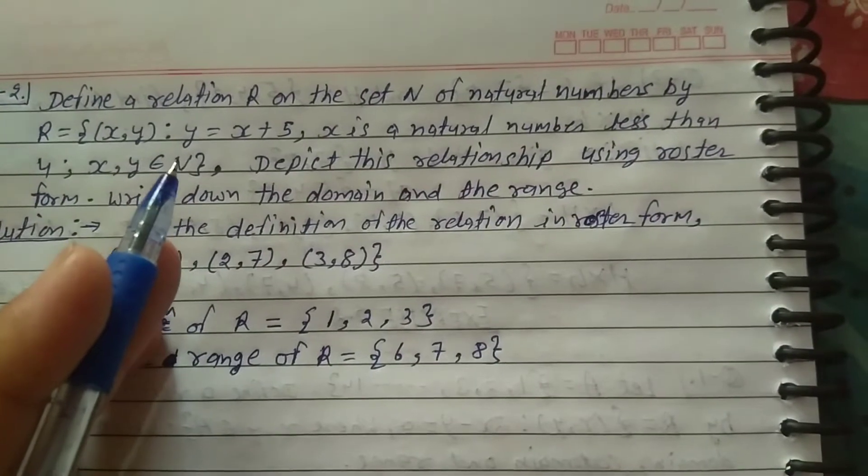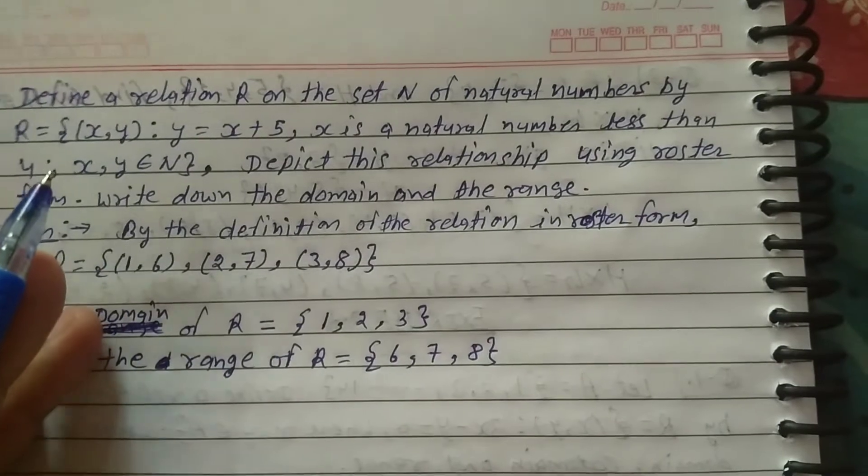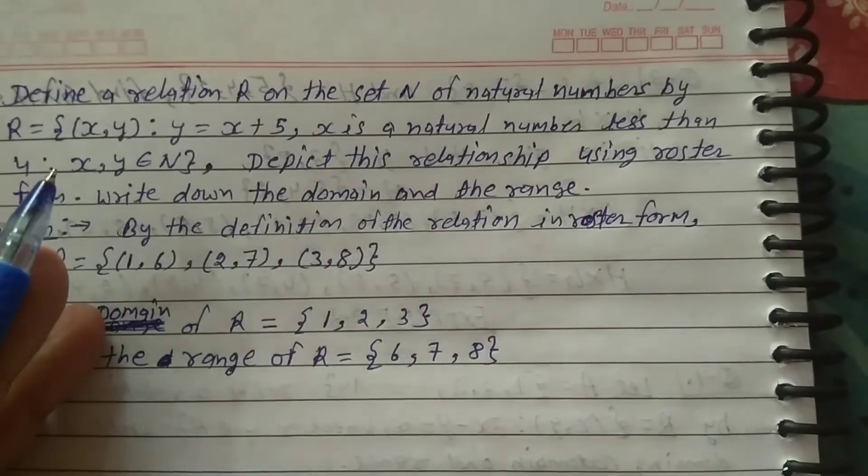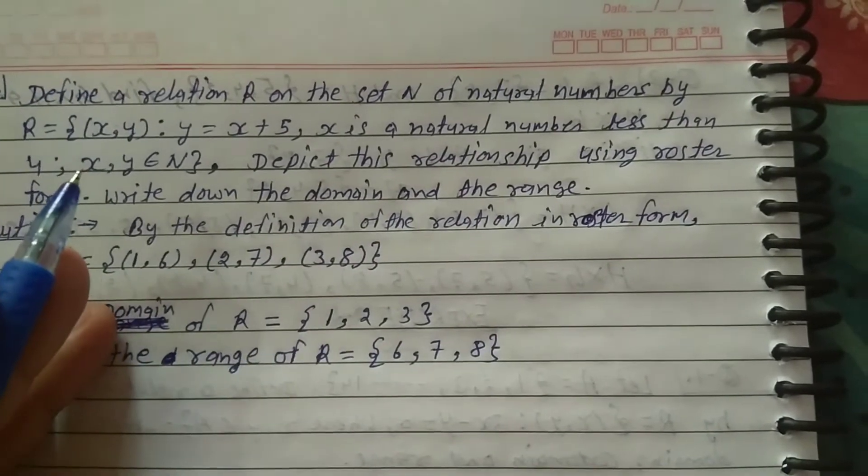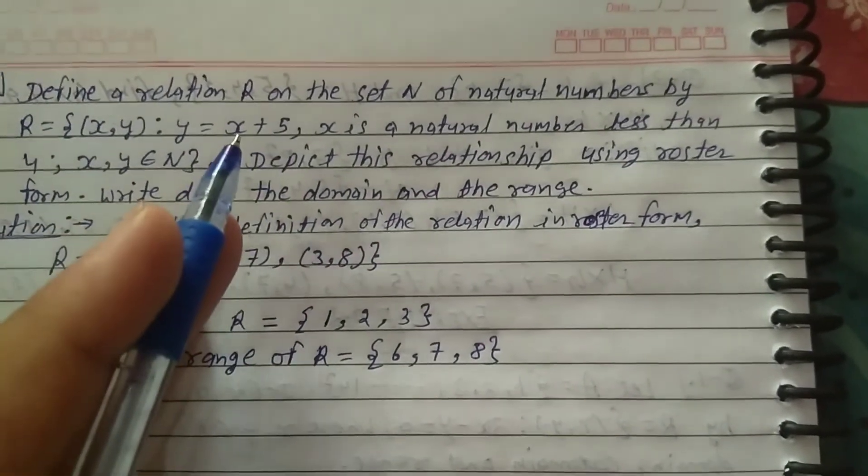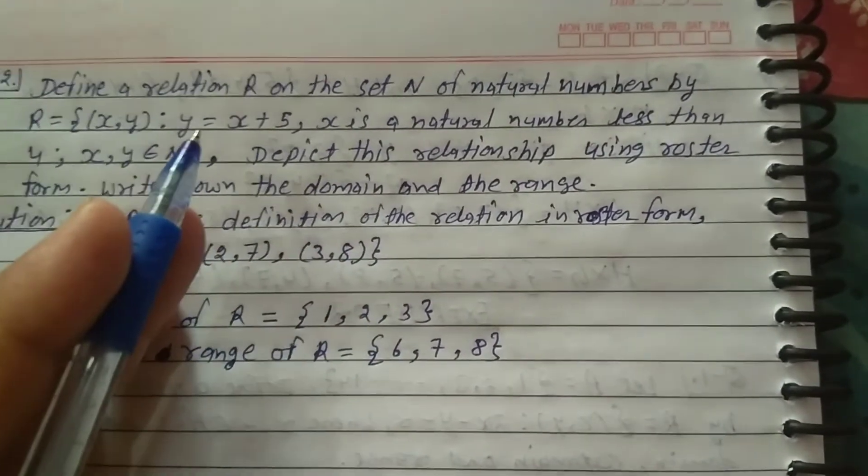Take the value to the given condition of natural number less than 6. Take the values 1, 2, 3 for x value. First we take x value is 1, written in this relation, x is 1, so y equals 6.